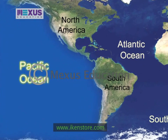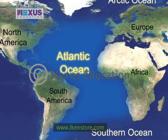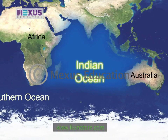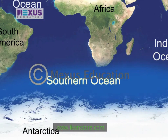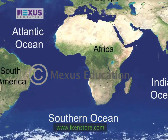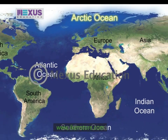The Pacific Ocean is the largest ocean in the world. The Atlantic Ocean is the second largest ocean. The Indian Ocean extends from the Southern Ocean to India, between Africa and Australia. The Southern Ocean surrounds Antarctica, while the Arctic Ocean lies over the North Pole.